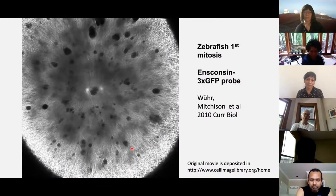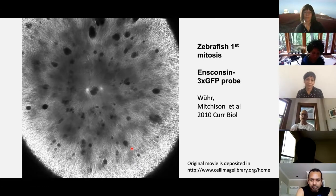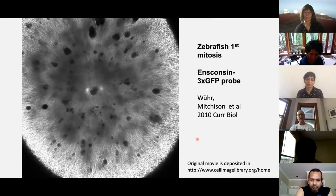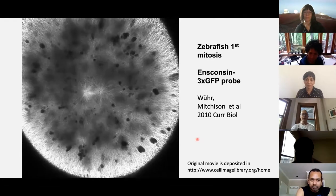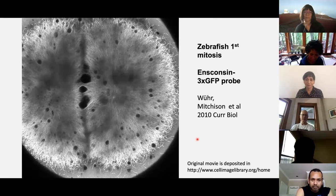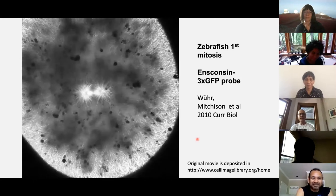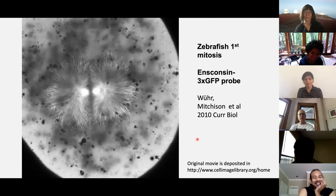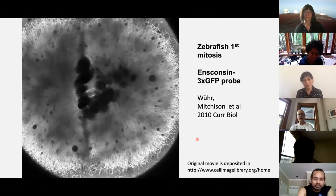We can't look live in frog eggs because they're opaque, but you can look live in fish eggs, where the yolk is all segregated down to the bottom of the egg. Here's a beautiful movie taken by Martin Wühr using a probe stuck to microtubules in fish eggs, showing the events right before burst mitosis through to cleavage. You can see these huge asters grow to fill the cells — I think this is one of the most beautiful movies taken in my lab over the years.